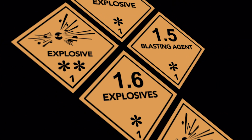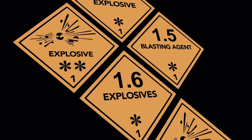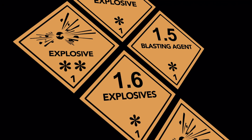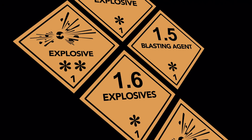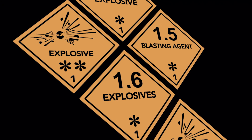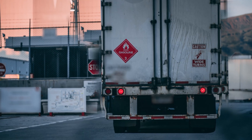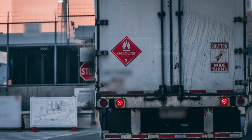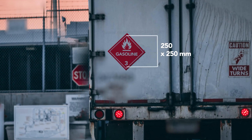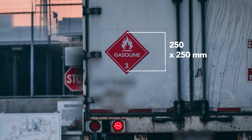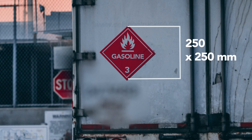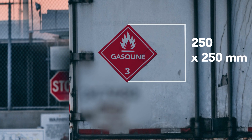Each hazard class has one or more placards, and they indicate just the hazard class or the class and the division. Placards must be securely attached to the transport vehicle and be at least 250 x 250 mm in size. Placards are always placed on each side and end — front and back — of a container or vehicle.